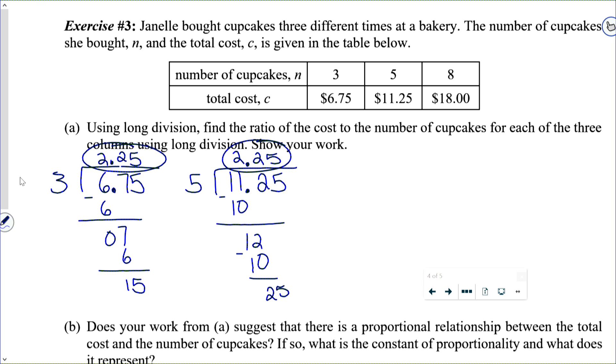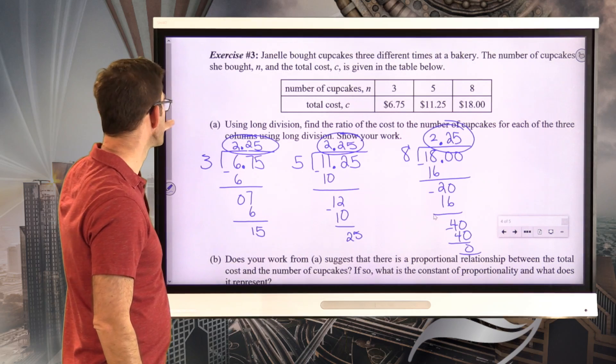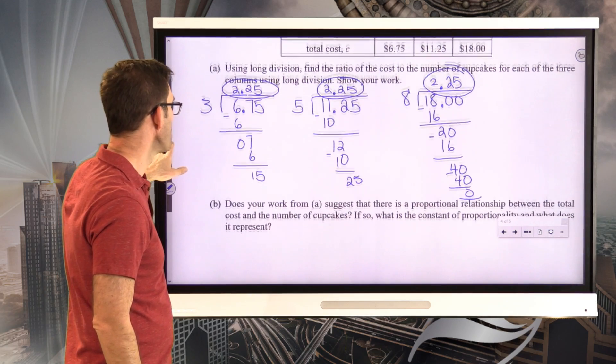And in the final case, we've got 18.00 divided by eight. Eight goes into 18, two times. That gives me 16. Subtract, 20. Eight goes into 20, two times, 16. Subtract, 40, and eight goes into 40, five times. And we get that. So, there's our answer in each case, the ratio of the cost to the number of cupcakes.